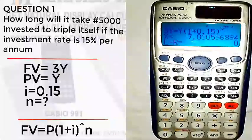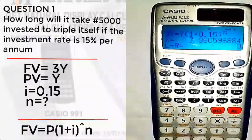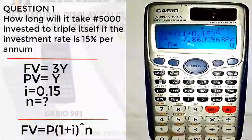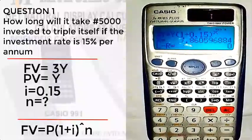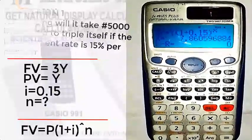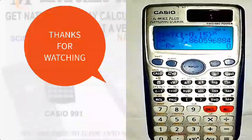It will return the answer after some seconds. So what we have there is 7.86. So it means it will take approximately eight years for an investment at 15 percent interest rate to triple itself.